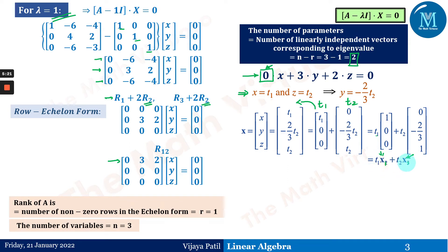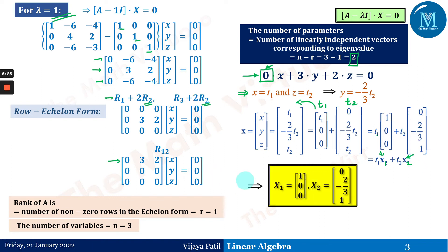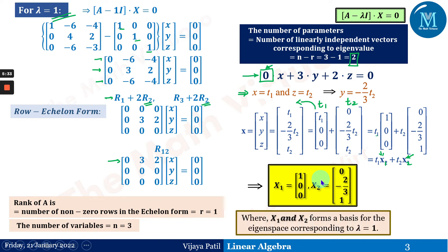Taking t1 out gives basis vector x1 = [1, 0, 0], and taking t2 out gives x2 = [0, −2/3, 1]. So x1 and x2 form a basis for the eigen space corresponding to λ = 1. Note that if you assume different variables, you get a different but equivalent basis.